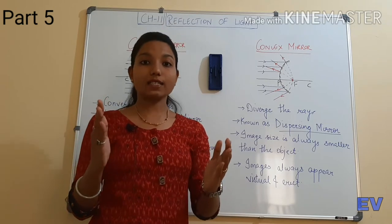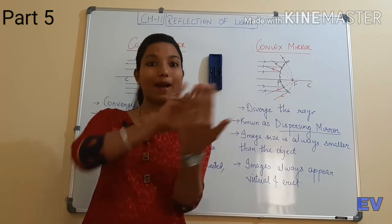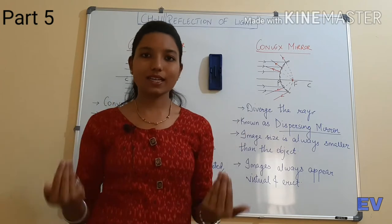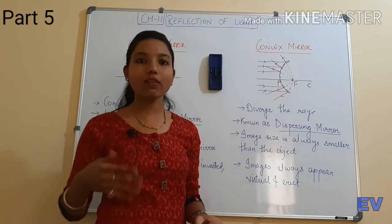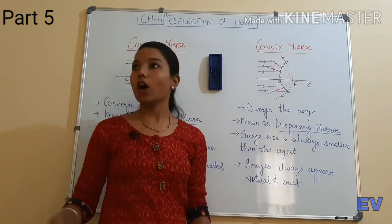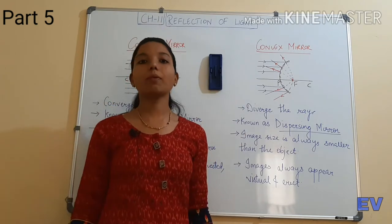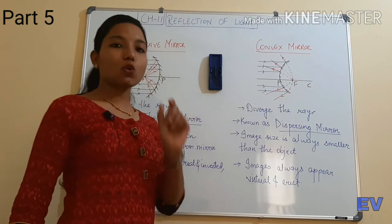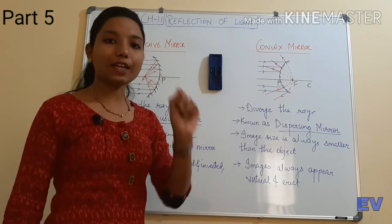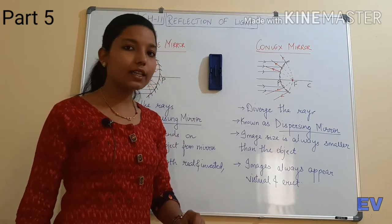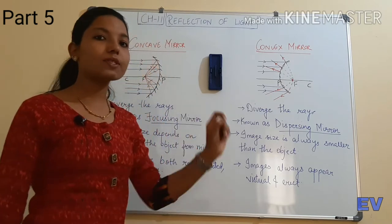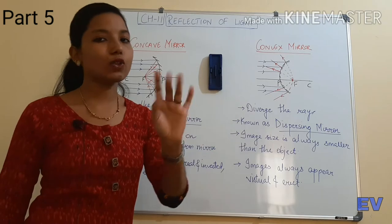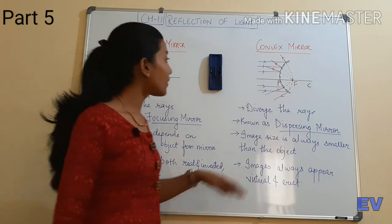The reflective coating is on the back side, that's why we keep the mirror with the coating side facing us so we can see our face. The surface that reflects the light — if you put the object on the wrong side, it will not reflect. So you have understood that it is parallel to the principal axis, but something is different here.